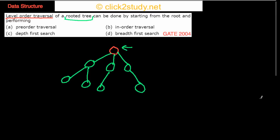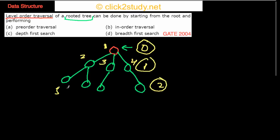What do you understand by level order traversal? In a level order traversal, you first go through the root node — that's level zero. Then you go to level one, which might have nodes two, three, four. Then you go to level two and write the nodes like five, six, seven, eight. So that's level order traversal going in order: one, two, three, four, five, six, seven, eight.